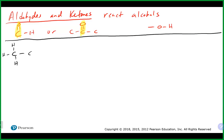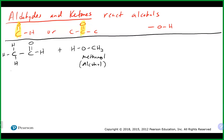Let's start with just a nice basic simple aldehyde — we'll do ethanal — and we're going to add a simple alcohol, methanol. When we do this addition of just one alcohol to our aldehyde, we're going to do basically an addition reaction, very similar to what we talked about with the carbon-carbon double bond where we put two things on.